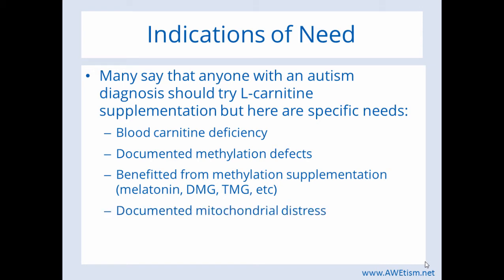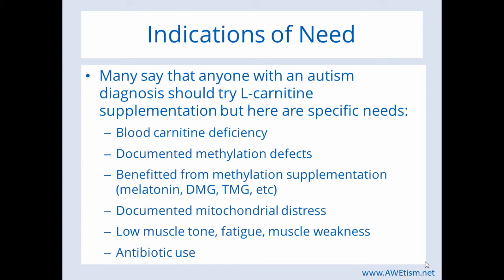If your child has documented mitochondrial distress, low muscle tone, fatigue, or muscle weakness, carnitine deficiency means that long-chain fats aren't transported into the mitochondrial compartment, meaning ATP — our cellular energy — is not produced at optimal levels. Therefore you'll see things like fatigue, muscle weakness, and a lack of energy on a more global level. ATP is cellular energy, so if you don't have much of it, you're going to see cellular fatigue and whole body fatigue. Another indication of need is any antibiotic use, and I'll go into the microbiota and carnitine towards the end.